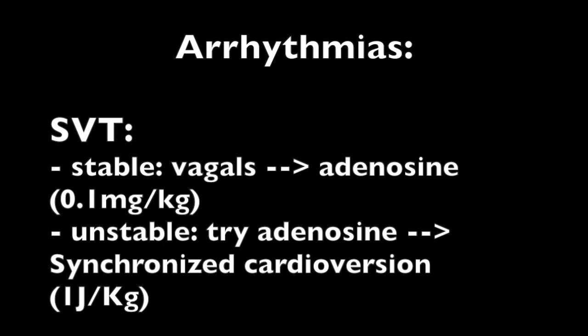The next rhythm is SVT. Just like adults, you want to find out if the patient is stable or unstable. If stable, give vagal maneuvers, then adenosine — the dosing is 0.1 mg per kg. For unstable SVT, you are allowed to try adenosine first, but do not delay treatment. If they don't have an IV, go ahead and cardiovert. If they do have an IV, try adenosine first, and if that fails, cardiovert at 1 joule per kg.